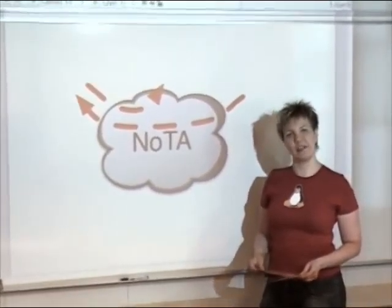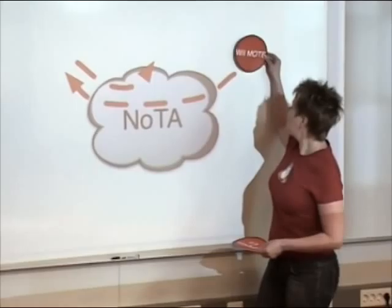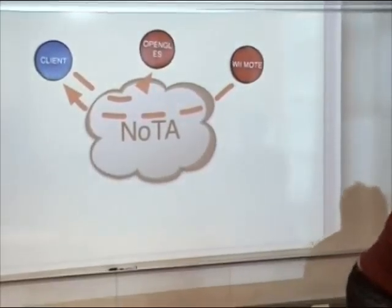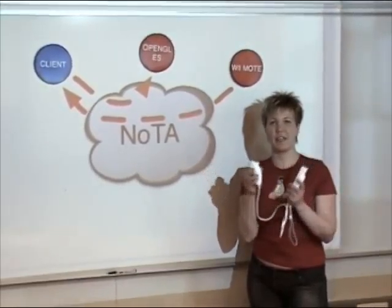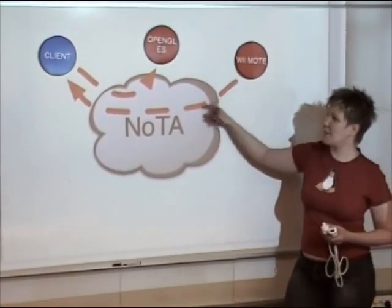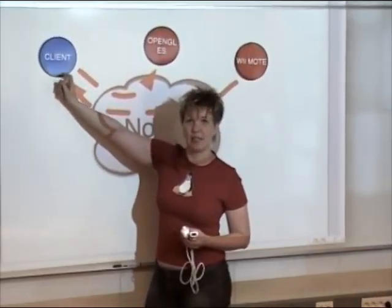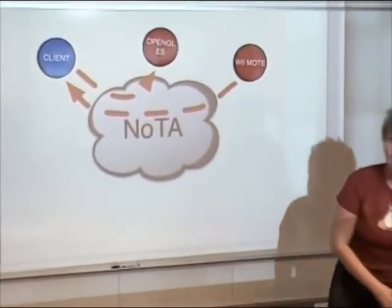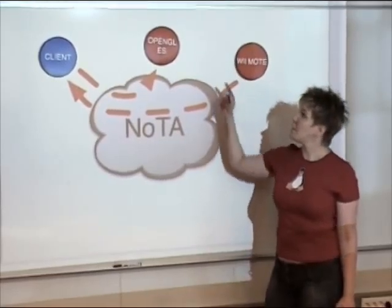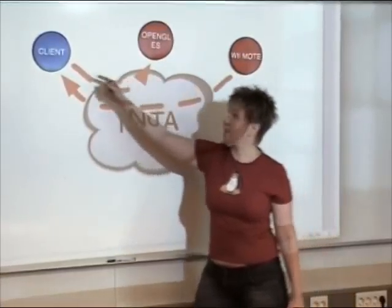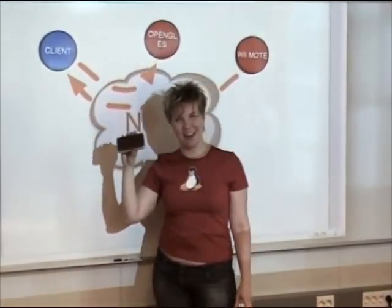Traditionally, flight simulators are centralized, but our flight simulator built on top of NOTA has been distributed. The NOTA application contains three nodes. The flight simulator is controlled with the Wiimote, which is attached to the Wiimote service node via Bluetooth. The service node then sends commands to the client, which can send graphic commands to the graphic server. The computations have been distributed: the graphic server and the Wiimote are running on a Linux PC, and the client is running on an internet tablet.